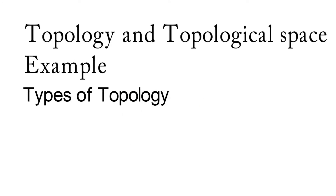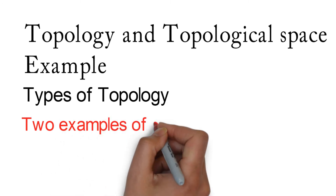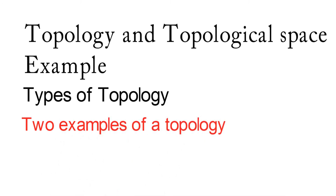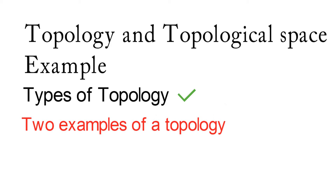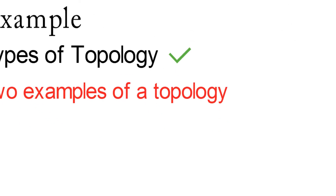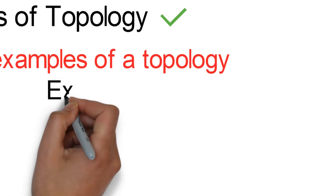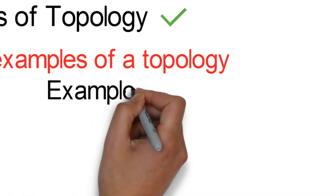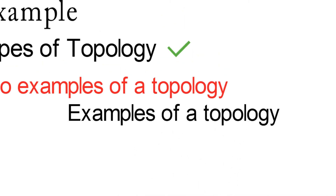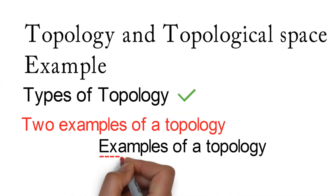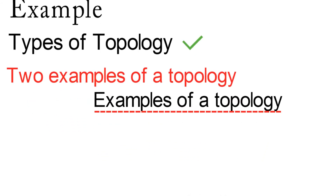As a continuation of our last class, we are going to treat two examples of a topology first before we take the types of topology, which is what we have for today. Starting with the examples of a topology as a continuation to our last class.